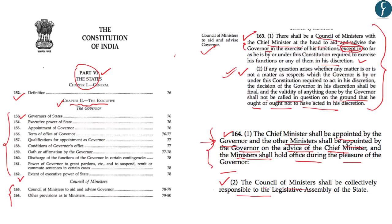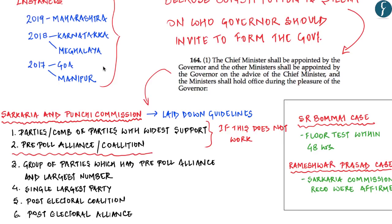The trouble emerges when no party or single coalition is successful in attaining a majority. Recent elections of Maharashtra reflect the same situation. Starting with 2017, we had Goa and Manipur legislative assembly elections in which the largest party was not invited to form the government by the governor. Similarly, in 2018, in Meghalaya and Karnataka, the swearing-in of the chief minister of Karnataka was conducted even though that person did not command the majority.